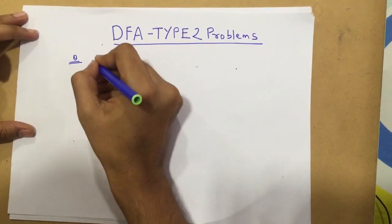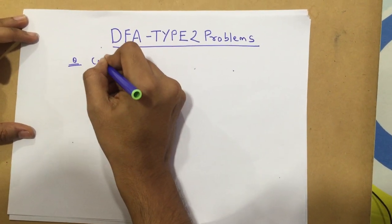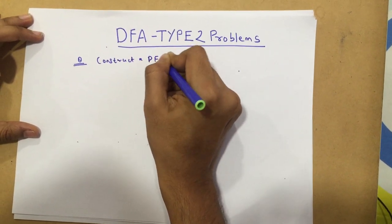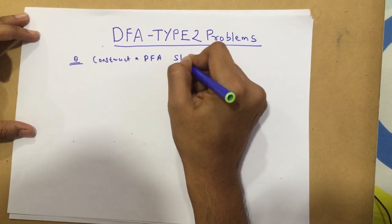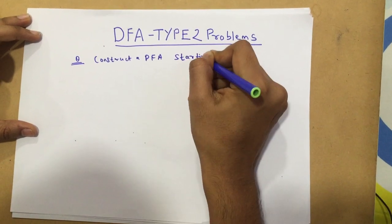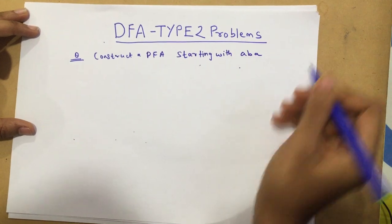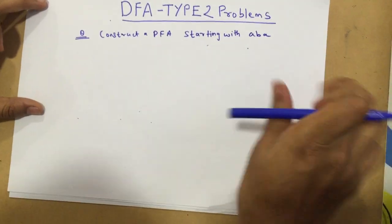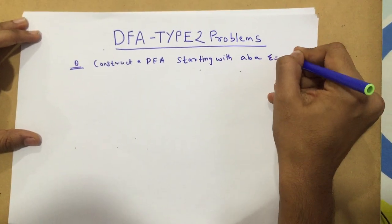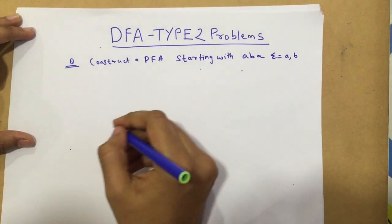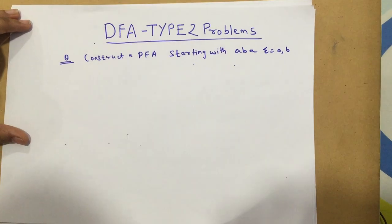We have to construct a DFA for all strings starting with, let's say, ABA. And our summation is equal to A, B, that is our inputs are A and B, no other alphabet is accepted by the DFA. So let's start.